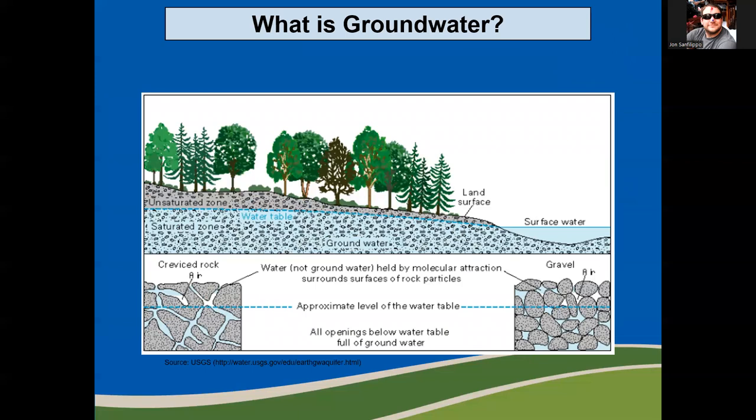What is groundwater? Groundwater is the saturated zone where the water completely occupies the fractures of the rock or pores of the sediment. This diagram is attempting to illustrate that there is water in the unsaturated zone that can be retained through molecular attraction. Water is a polar molecule, which means it is partially charged. If you want to understand why water can be sticky, try searching Van der Waals — V-A-N space D-E-R space W-A-A-L-S — or hydrogen bonding.